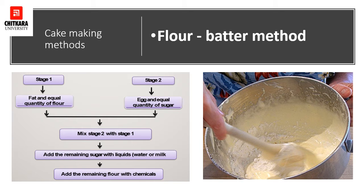Lastly, the remaining flour sifted with baking powder is added and mixed. As shown in the process chart, there are two stages: in the first stage we use fat and an equal quantity of flour; in the second stage we use egg and an equal quantity of sugar. Both stages are mixed together, then the remaining sugar with liquid is added, and finally the remaining flour mixed with a leavening agent is incorporated to complete the process.